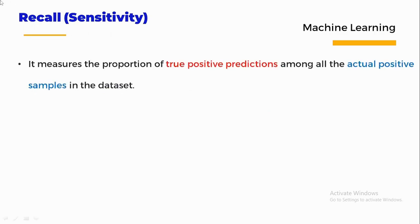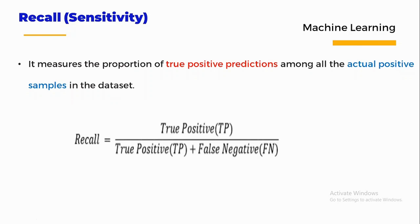Recall, also called sensitivity, measures the proportion of true positive predictions among all actual positive samples in the dataset. It is calculated by dividing true positives by the sum of true positives and false negatives: Recall = TP / (TP + FN). Recall is useful in cases where false negatives are a higher concern than false positives.